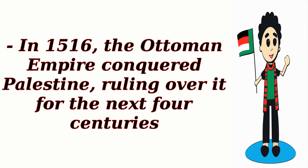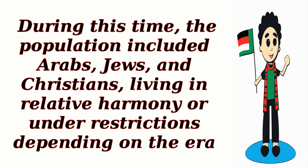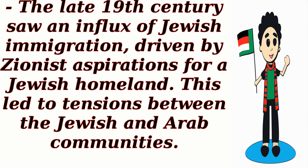In 1516, the Ottoman Empire conquered Palestine, ruling over it for the next four centuries. During this time, the population included Arabs, Jews, and Christians, living in relative harmony or under restrictions, depending on the era. The late 19th century saw an influx of Jewish immigration, driven by Zionist aspirations for a Jewish homeland, which led to tensions between the Jewish and Arab communities.